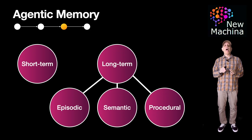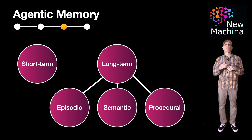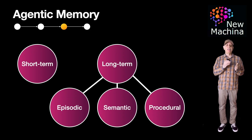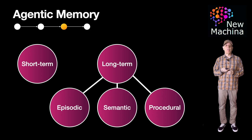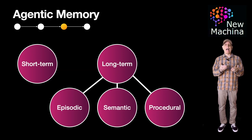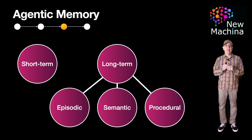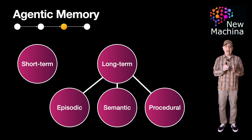So next, how is procedural memory implemented? Well, procedural memory is implemented by including skills and procedures and saving these reusable plans, graphs, or chains in a data store. This type of memory is crucial for tasks that require repetitive actions or learned skills. In essence, procedural memory is like a manual or a runbook where instructions for tasks are stored and executed as needed.